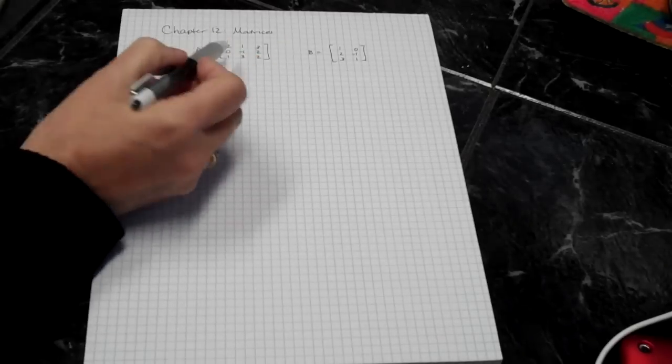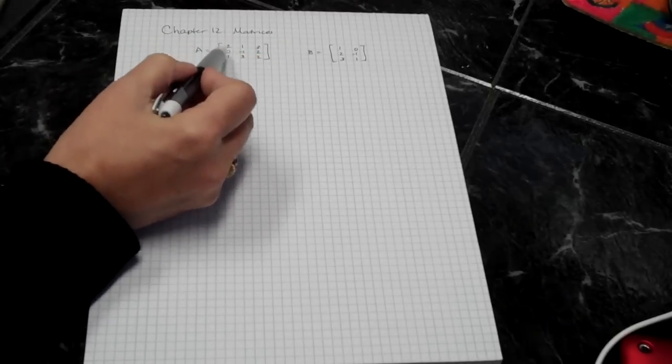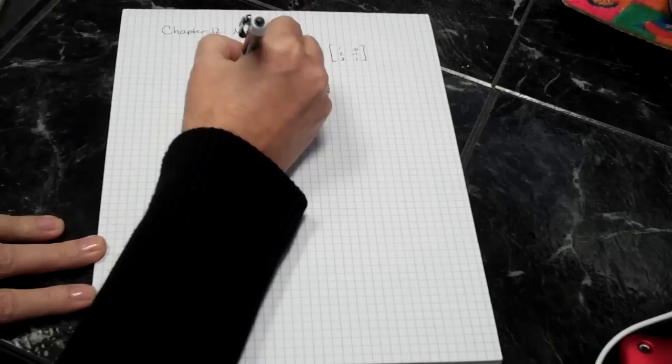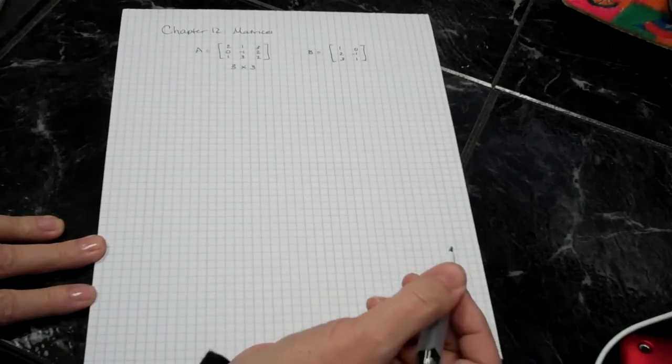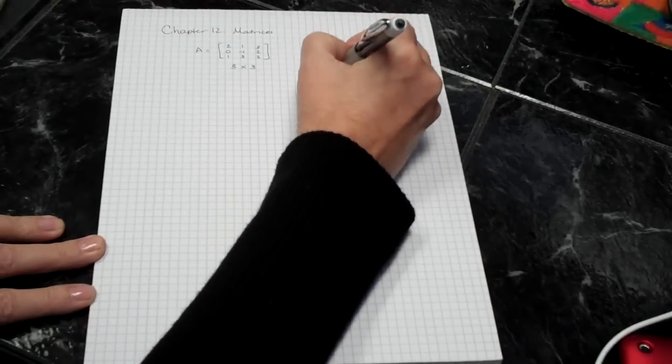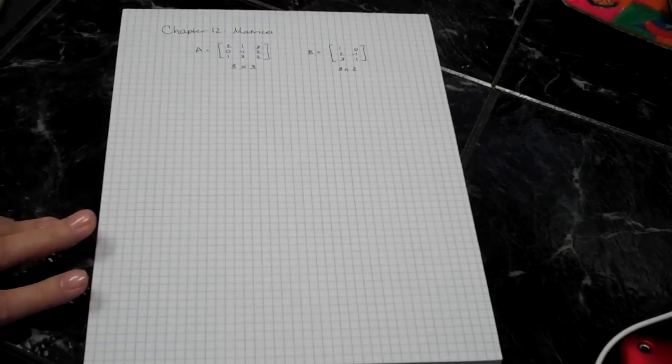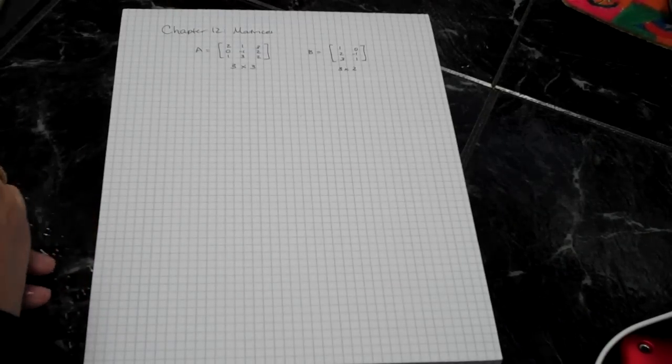They have a certain number of rows and a certain number of columns. So this matrix has 3 rows and 3 columns, and we call it a 3 by 3. This one has 3 rows and 2 columns.